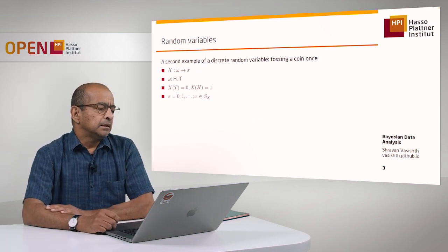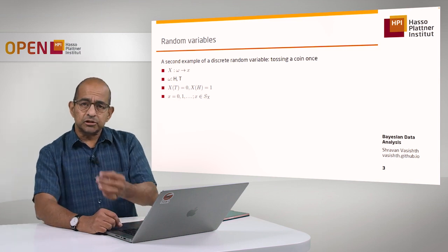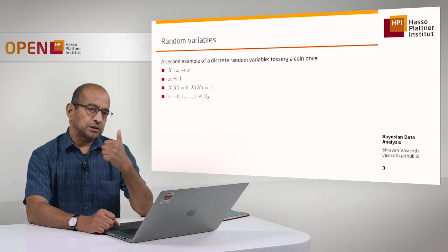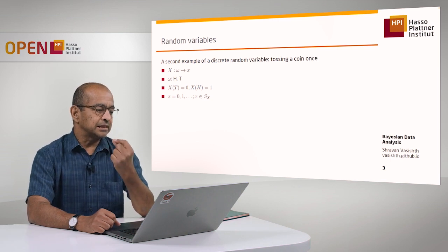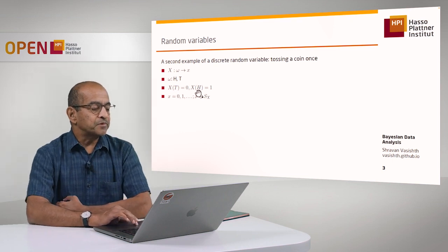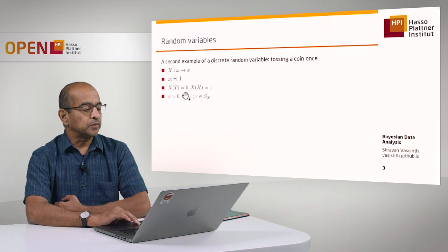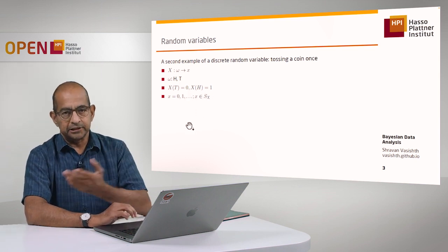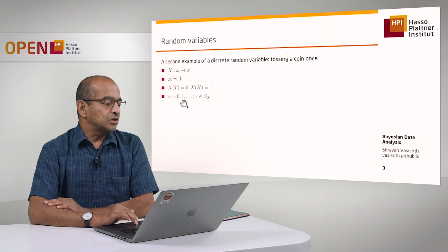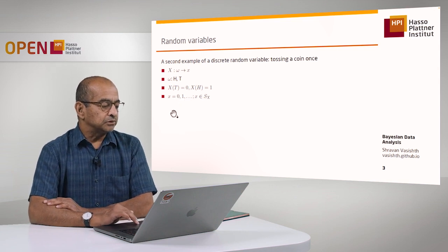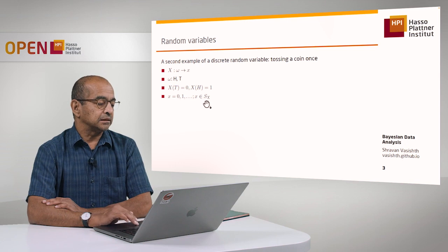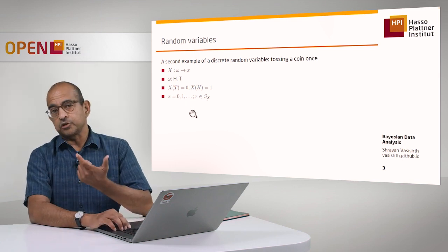Here's another example. Suppose I just toss a coin once — a single toss. I have only two possible outcomes: tails or heads. What the random variable does is take each of those two possible events and map them to a number, like 0 for tails and 1 for heads, though that's an arbitrary decision. So the support of X contains only 0 and 1 — it's a finite set with two possible values.